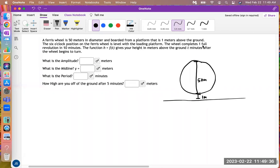The wheel completes one full revolution in 10 minutes. So if it's one full revolution in 10 minutes, that means halfway through, which means from the bottom to the top, it would be at five minutes.